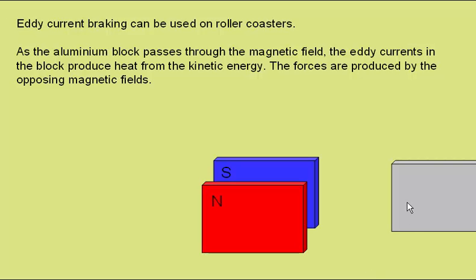Lenz's law tells us that the magnetic field produced by the eddy current within the aluminium block will be in the opposite direction to the magnetic field due to the permanent magnets.